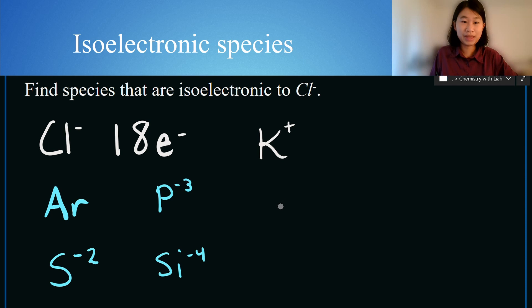Now what other cation can we make that has 18 electrons? Well, if you look at calcium, calcium has 20 electrons, and so you would have to take away two electrons, and that would leave you with a plus two charge on calcium. So here again, we have some isoelectronic species to chlorine minus one.